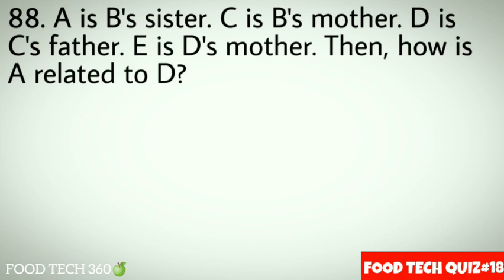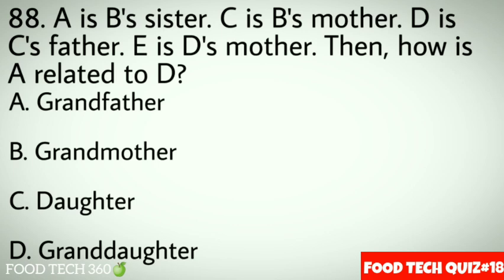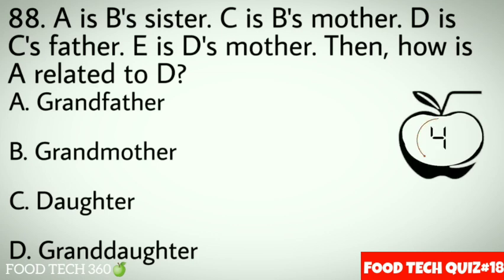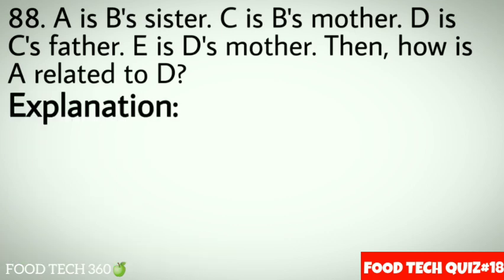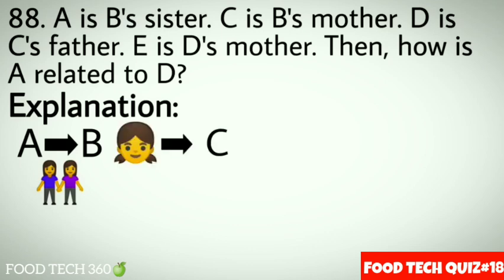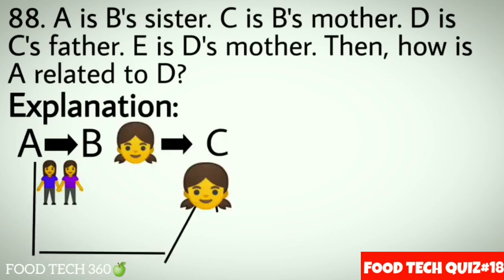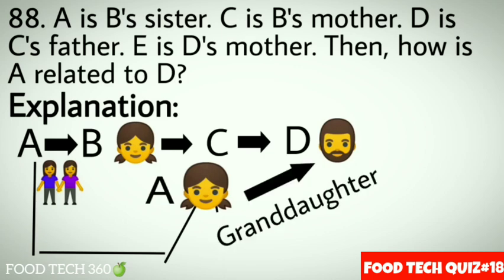Question 88: A is B's sister. C is B's mother. D is C's father. E is D's mother. Then how is A related to D? Options: A. Grandfather, B. Grandmother, C. Daughter, D. Granddaughter. Correct answer: D. Granddaughter. Explanation: A is the sister of B, and B is the daughter of C, so A is the daughter of C. D is the father of C, so A is the granddaughter of D.